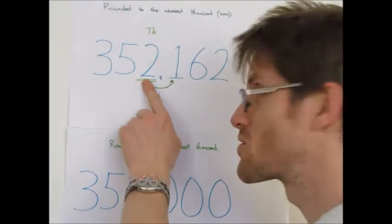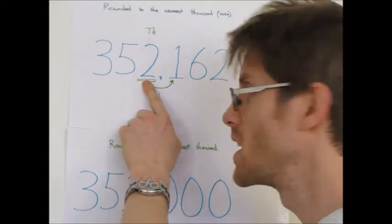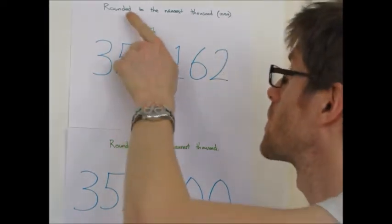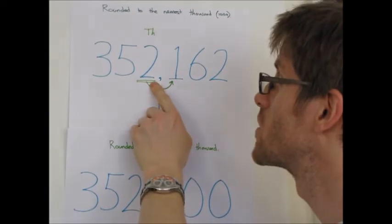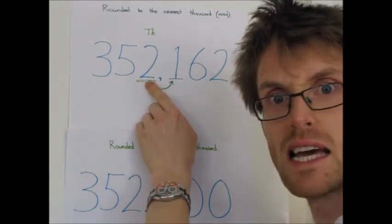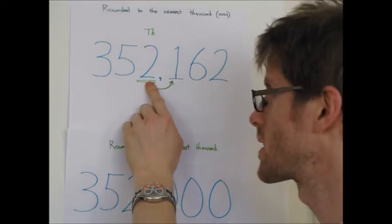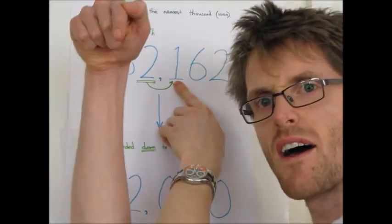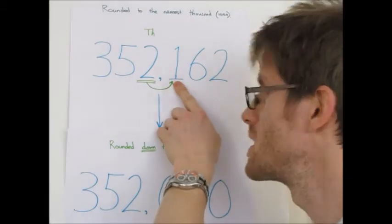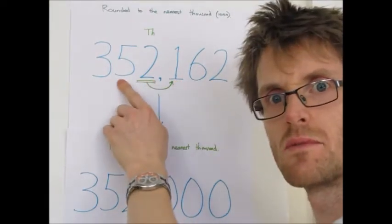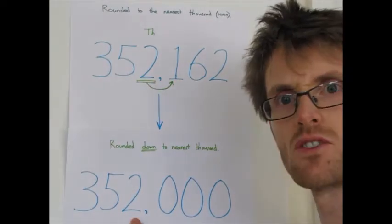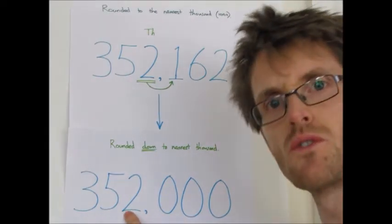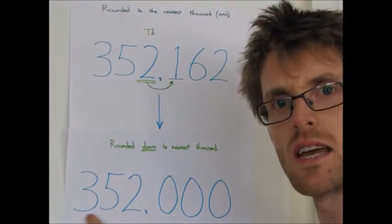So just like Mr. Cool did just a minute ago, you find your place. So I want to do it to the nearest thousand, so I'm going to the two because that's in the thousands column. I've found my place, then I'm going to go next door, okay, to the right over here. It's a one, that's not five or greater, so we're going to round it down. So all of these digits stay the same this time, like this. So it's going to be 352,000. Remember all the digits stay the same in front.